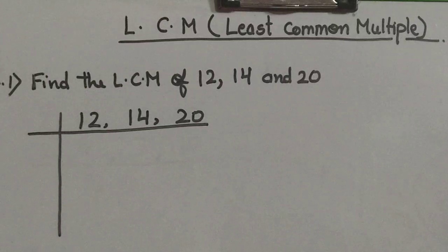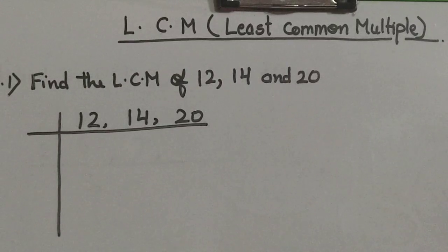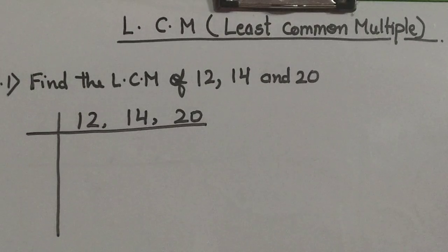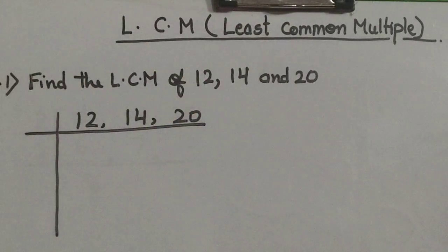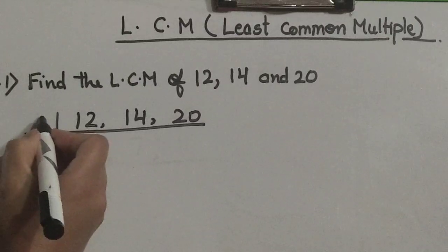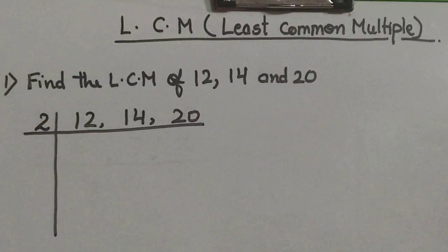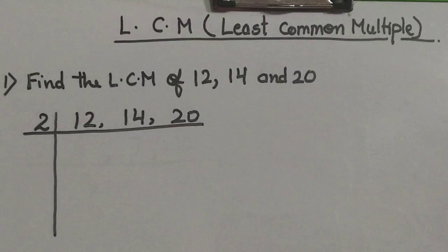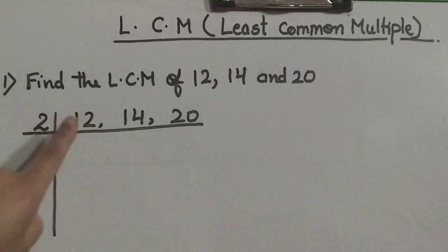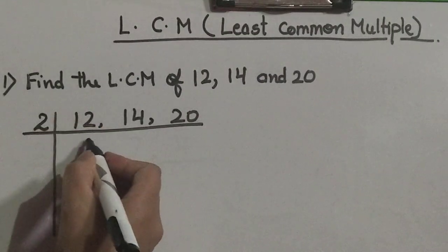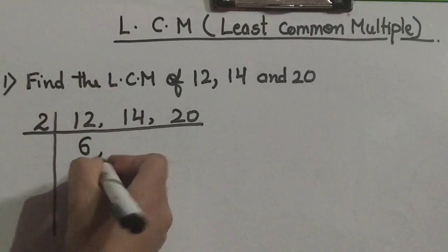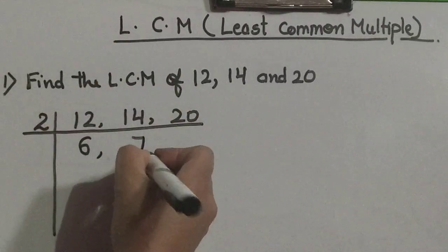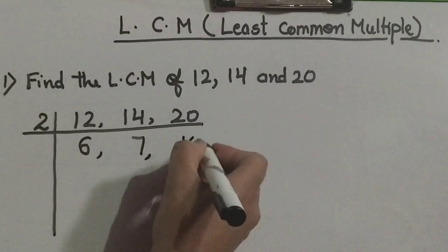What is our smallest prime number? 2. We will see if we can divide any of the numbers by 2 — we can divide 12, 14, and 20 all by 2, so we write 2 here. We then put the quotient directly under each number in the next row. 2 sixes are 12, so quotient is 6 under 12. 2 sevens are 14, so quotient is 7. 2 tens are 20, so quotient is 10.